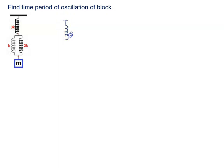I am thinking directly. Spring k and 2k both are connected in parallel. In parallel, the formula is k1 plus k2. k plus 2k is 3k, and it is connected to the block of mass m.